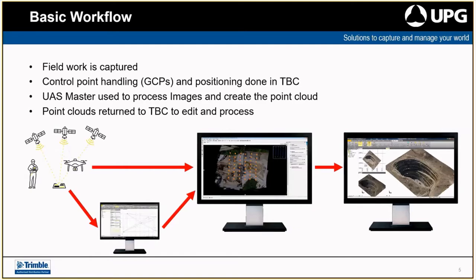The basic workflow for UAS Master starts with field work capture. You'll have two components: your GCP locations — which can be GPS or a shot location — and the photo component from the drone. In TBC, we set the projection and identify points to handle as GCPs, then send those to UAS Master. UAS Master is where we introduce the photos — TBC doesn't necessarily need to handle the photos in this workflow. Processing is done in UAS Master where you tie the aerial images to ground points, then send data back to TBC for continued editing.